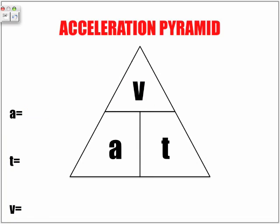The acceleration pyramid. Notice a change in the letters: V is at the top, then A next to T. These pyramids work the same way. So if we're trying to find A, cover up A. Notice we have V on top of T, so to find our acceleration we're going to take our speed and divide it by time.